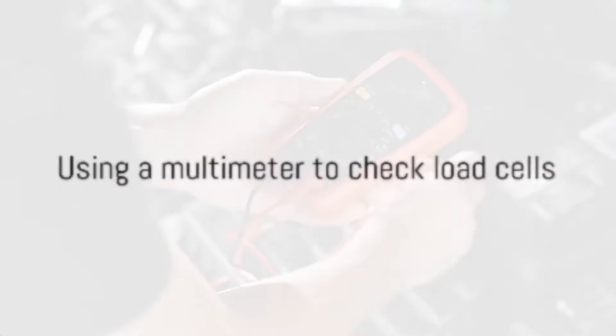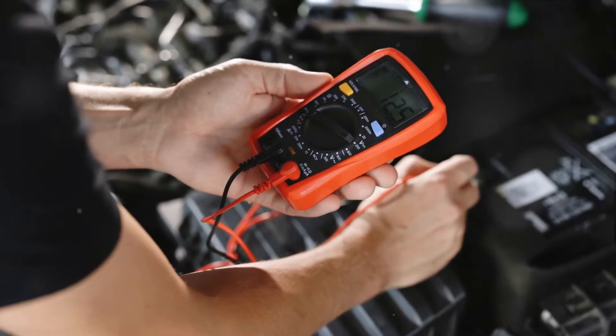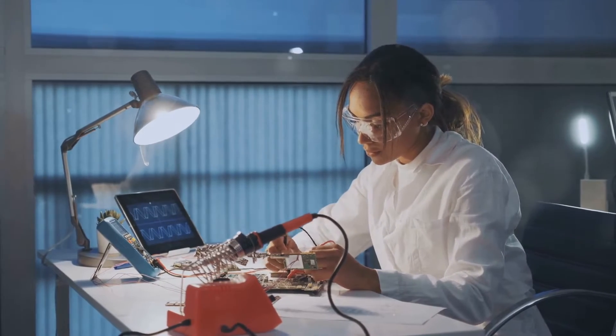To check the functionality of a load cell, our trusty tool, the multimeter, comes into play. This amazing instrument lets us measure various electrical properties such as resistance and voltage.